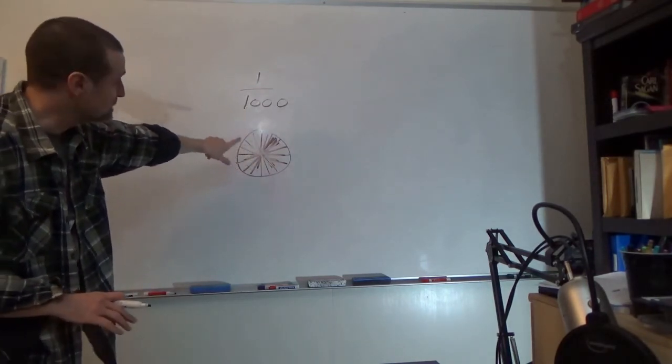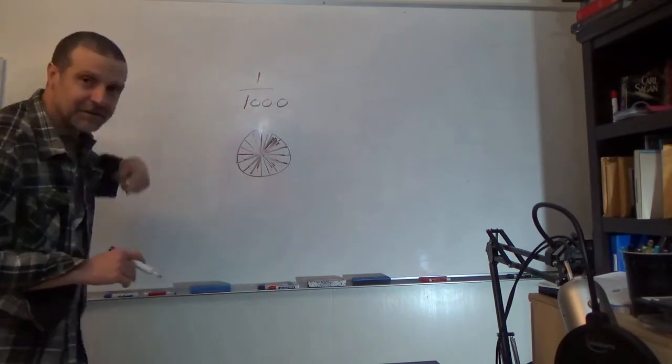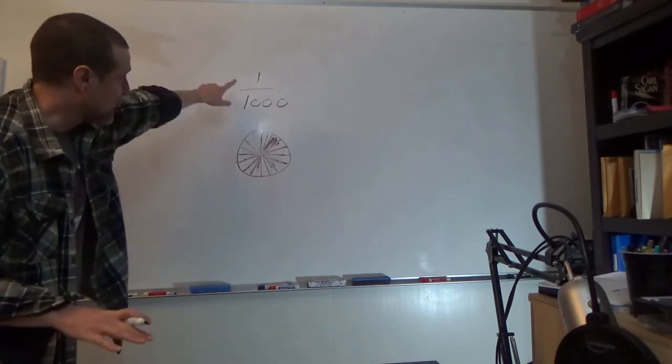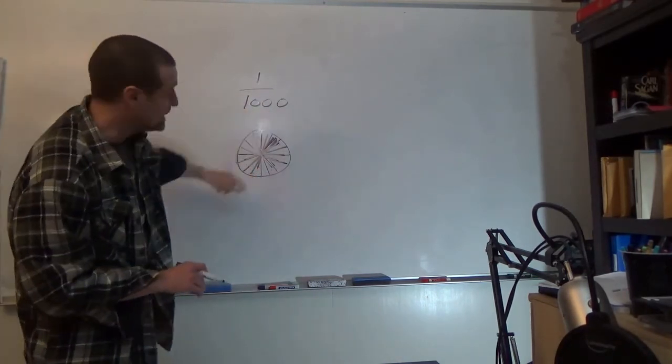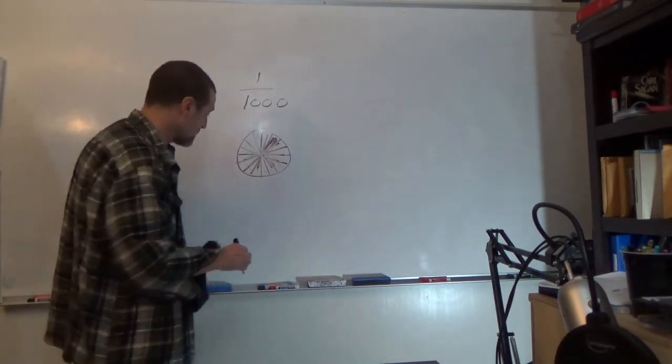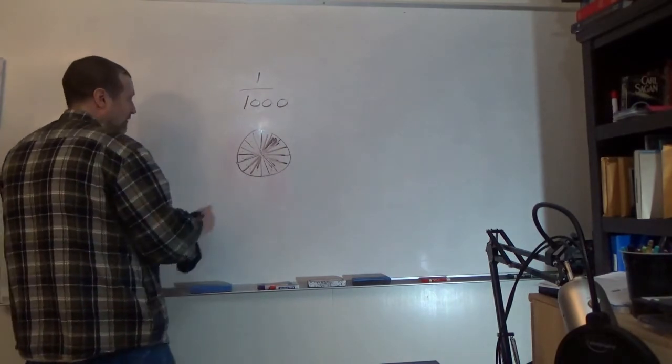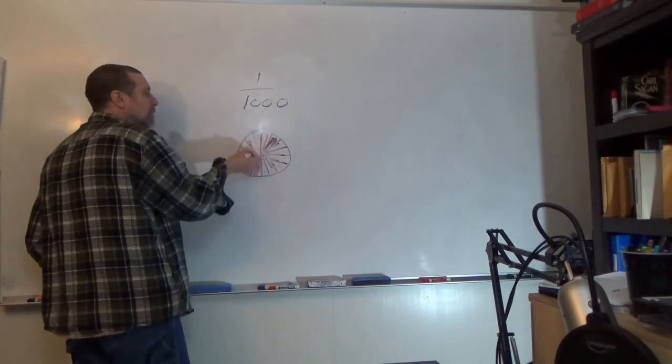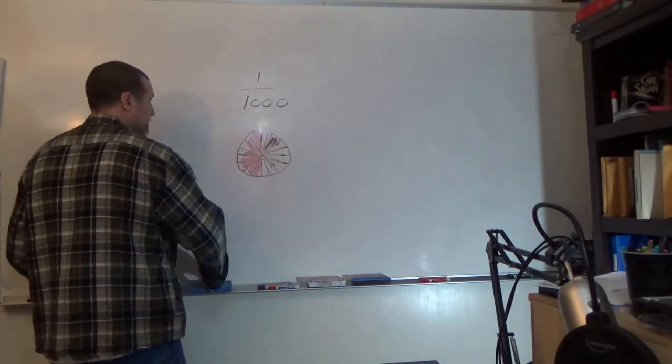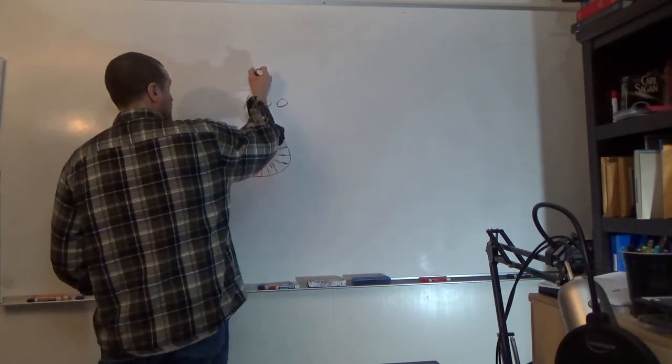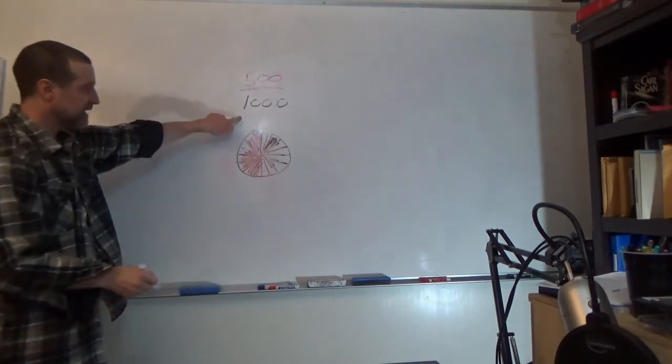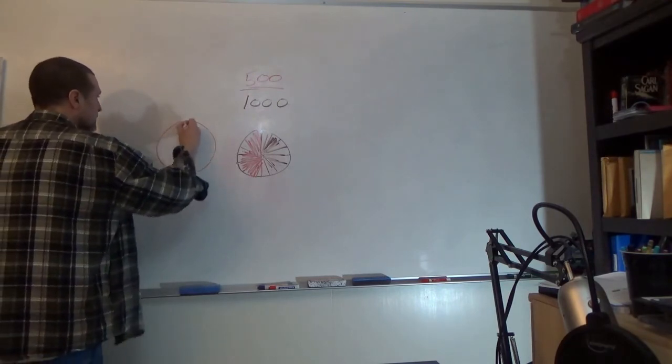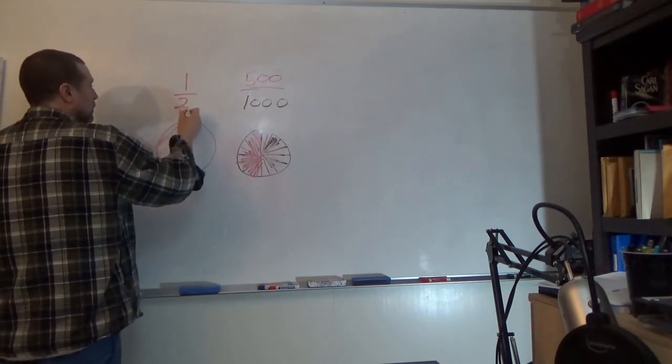And that's the kind of neat thing about fractions, is if you know these fractions, and going back, remember we could represent the same amount using different fractions. Well, I can represent, if I have 1,000 slices, and imagine I drew this properly, well, if I ate 500 of those 1,000, so I would eat 500 of those 1,000 slices, that's exactly the same as eating one of the two.